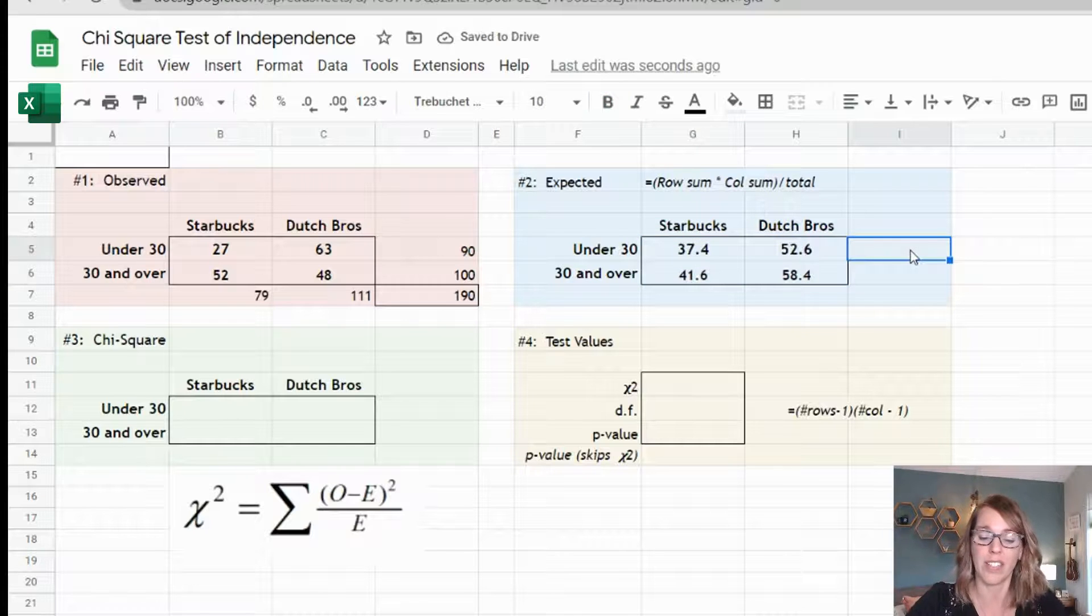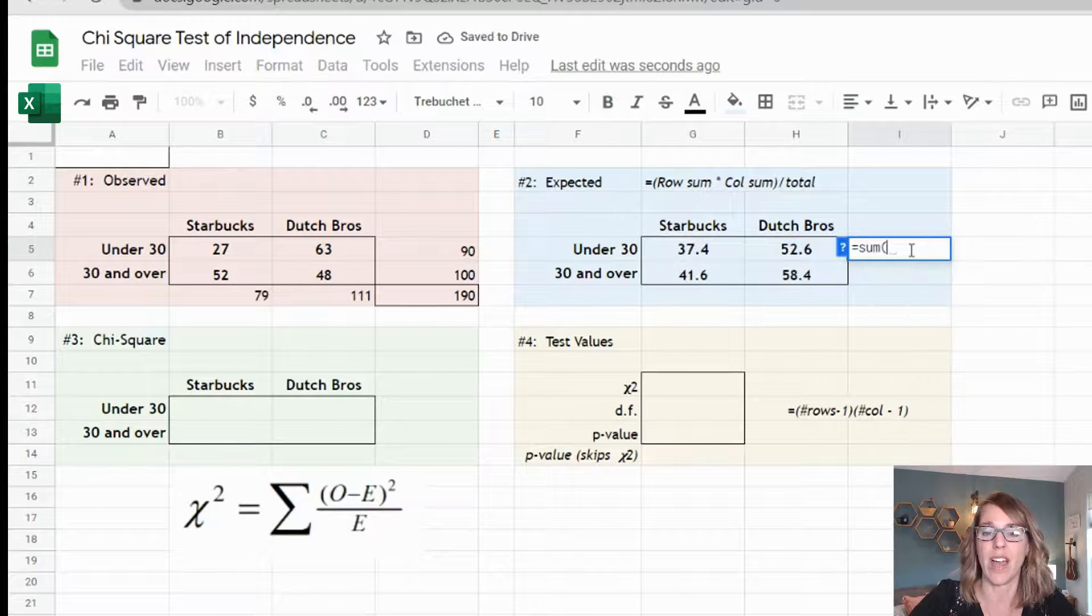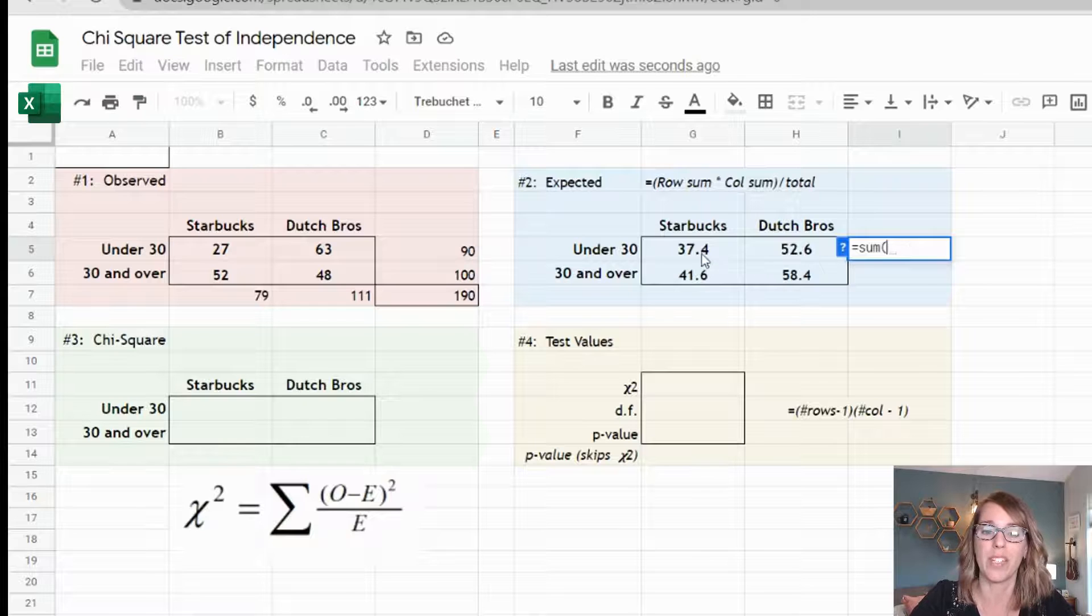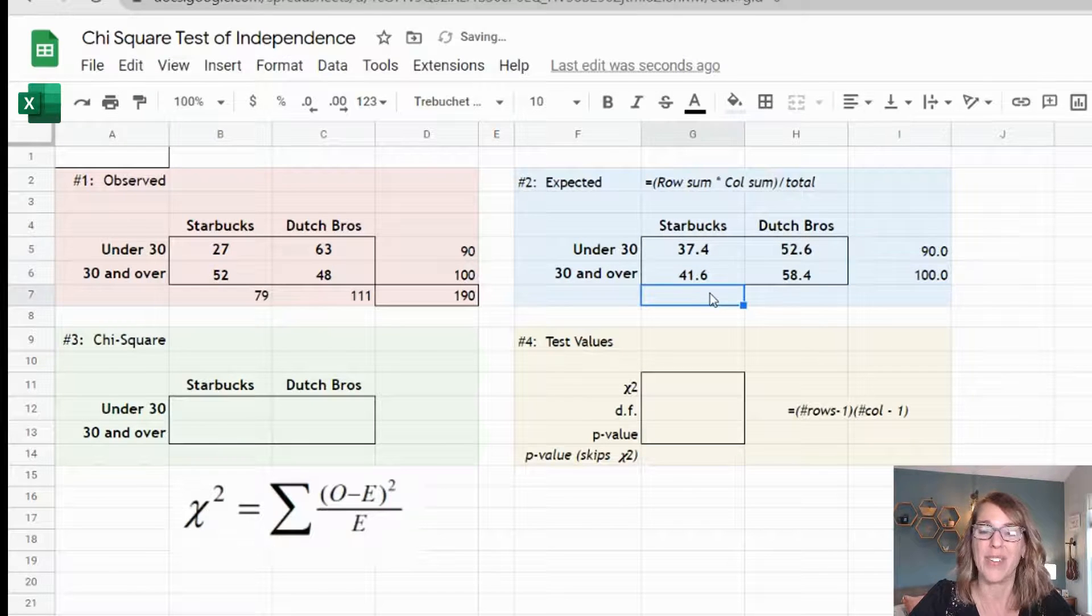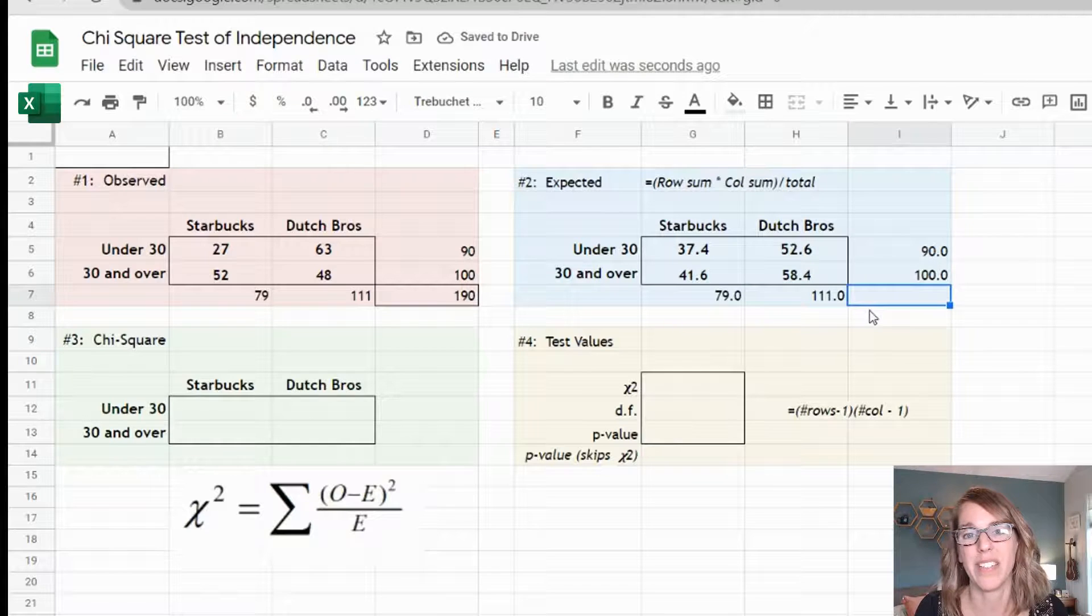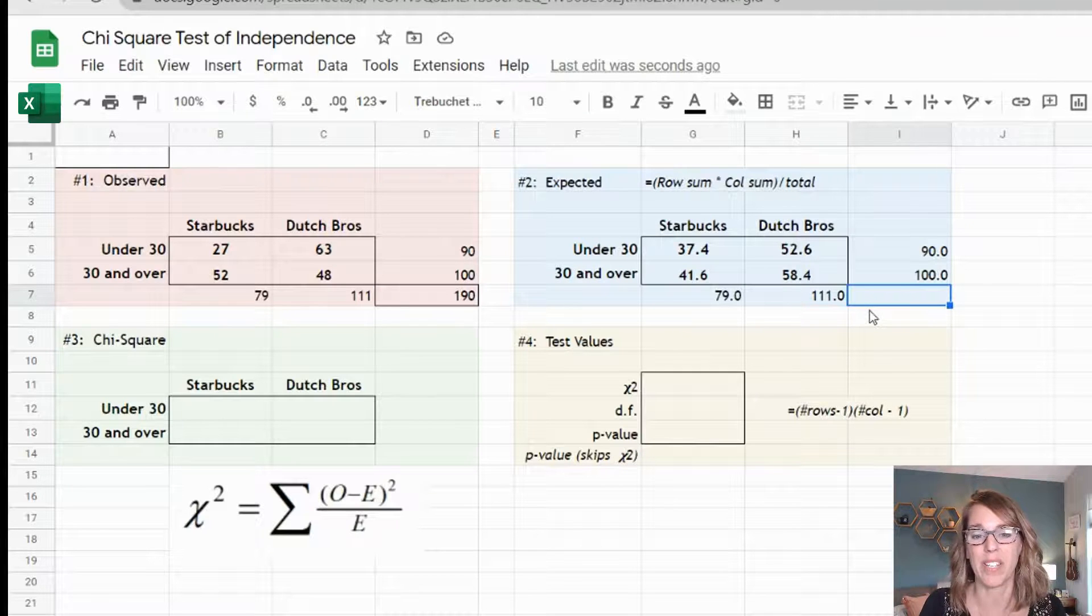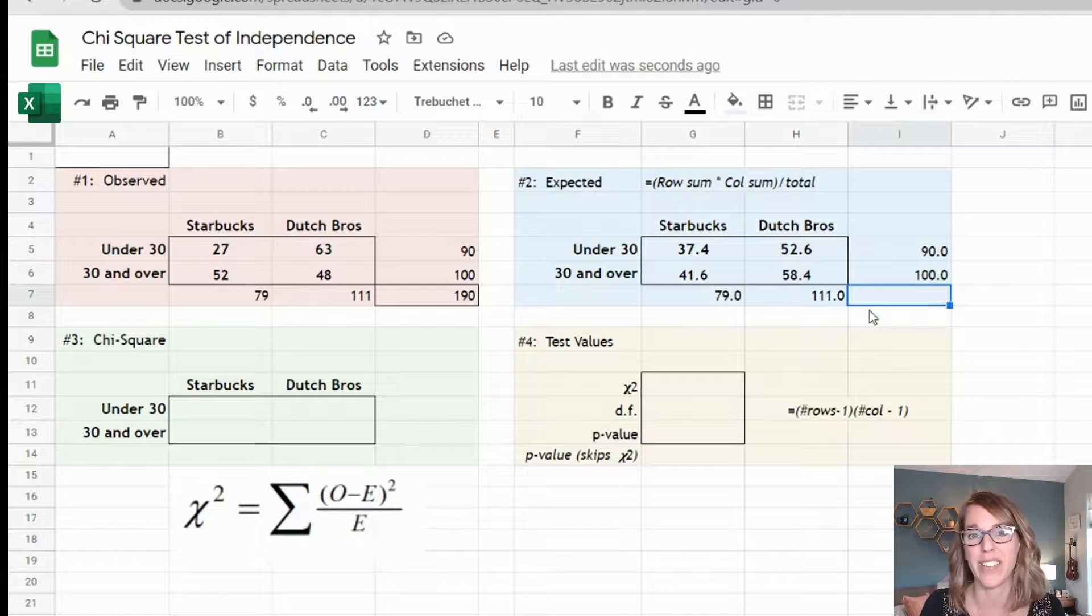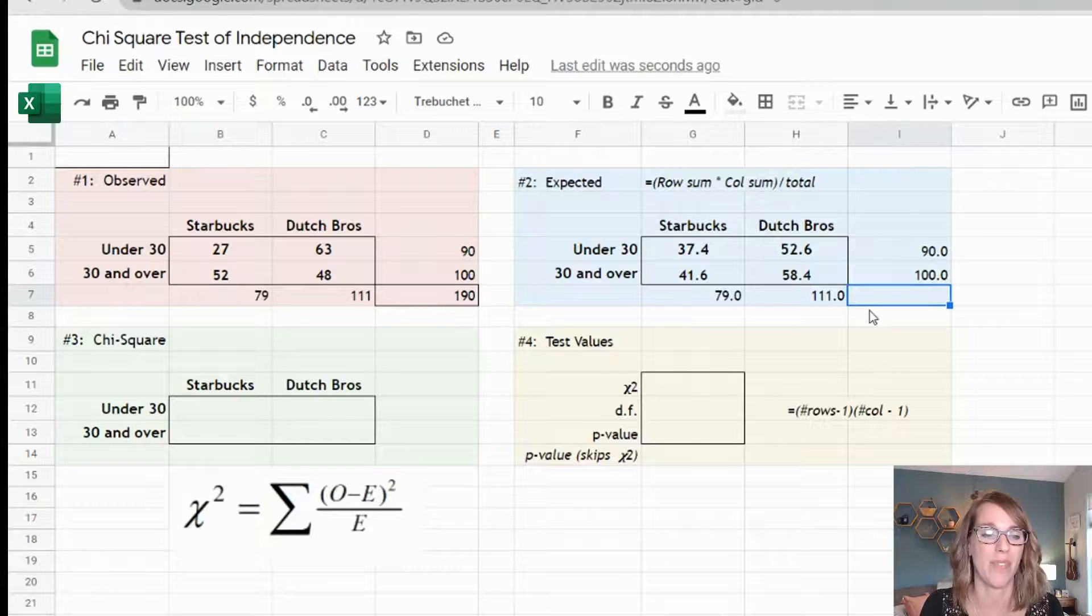Now a really great way to check these is to add each of these up. I went ahead and did a quick sum check and all of my sums match. If you're within 0.1 then you're fine because we did do a little bit of rounding there.